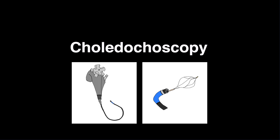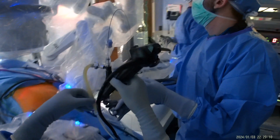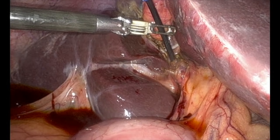Our use of choledocoscopy is limited and very different from previous CBD exploration techniques. It is rarely the first step as we are often successful with the fluoroscopic interventions, and we also do not dilate the cystic duct as this can perforate. So only if the anatomy is favorable — i.e., a cystic duct greater than 4 mm and non-tortuous — we will insert a choledocoscope. An alternative to a choledocoscope is a ureteroscope, which we have used several times and should be available at any facility.